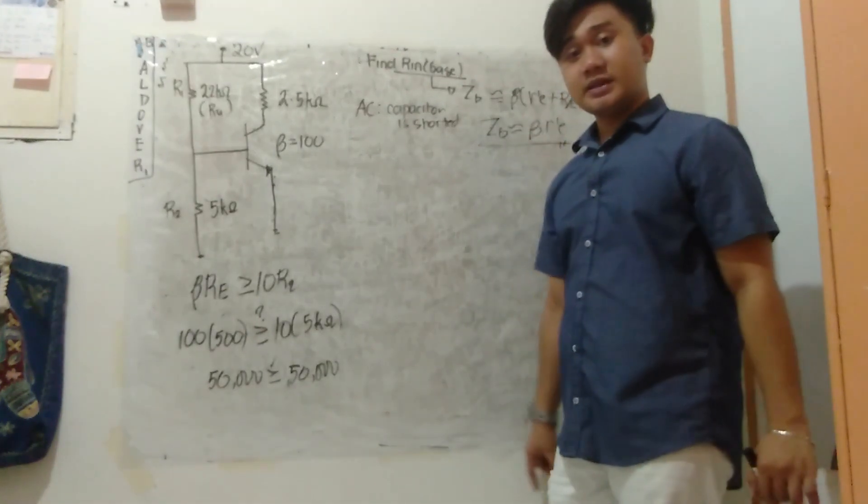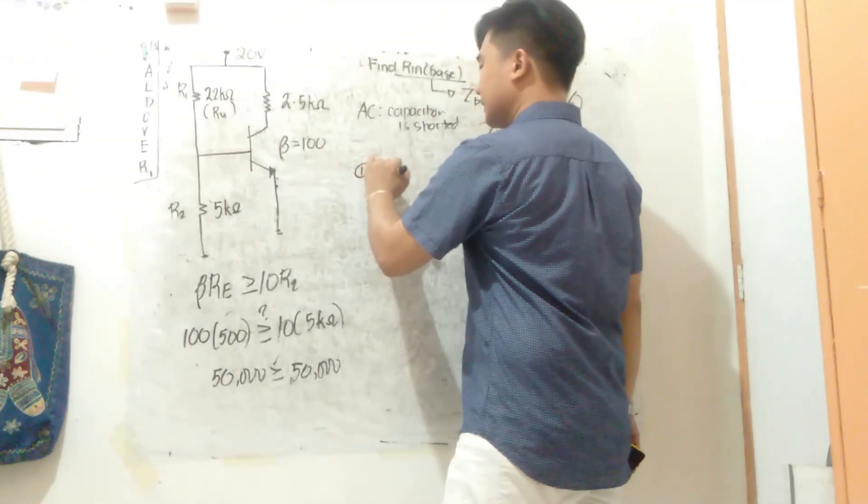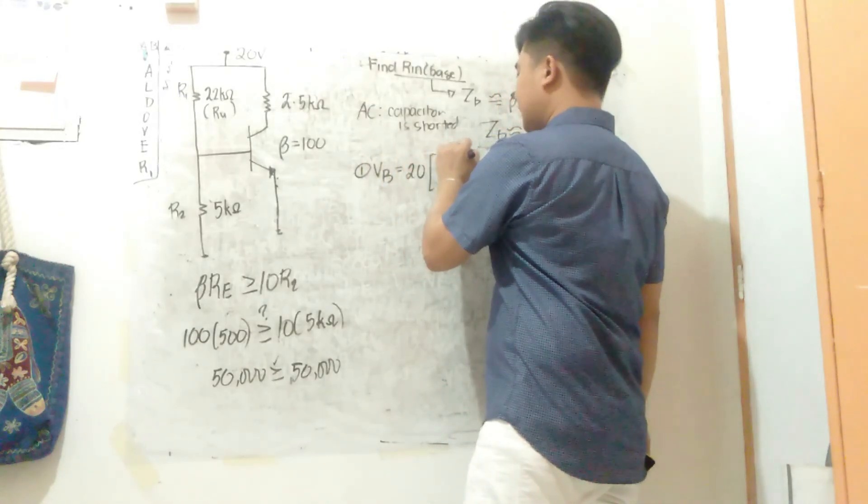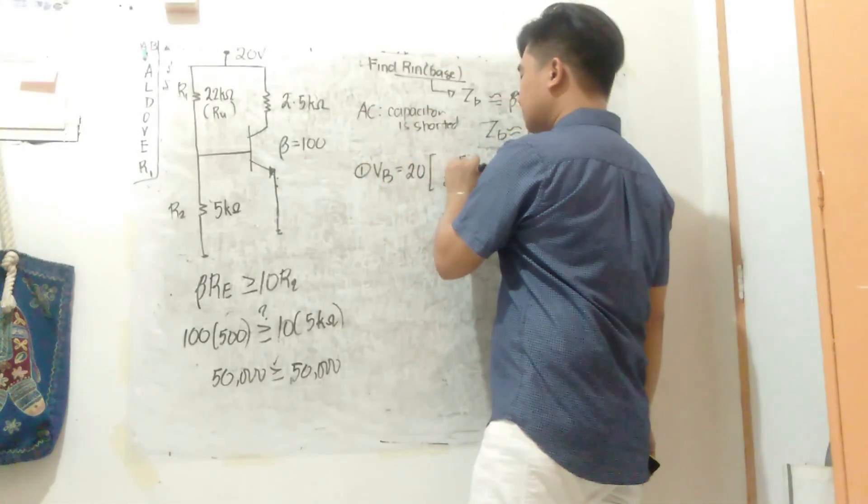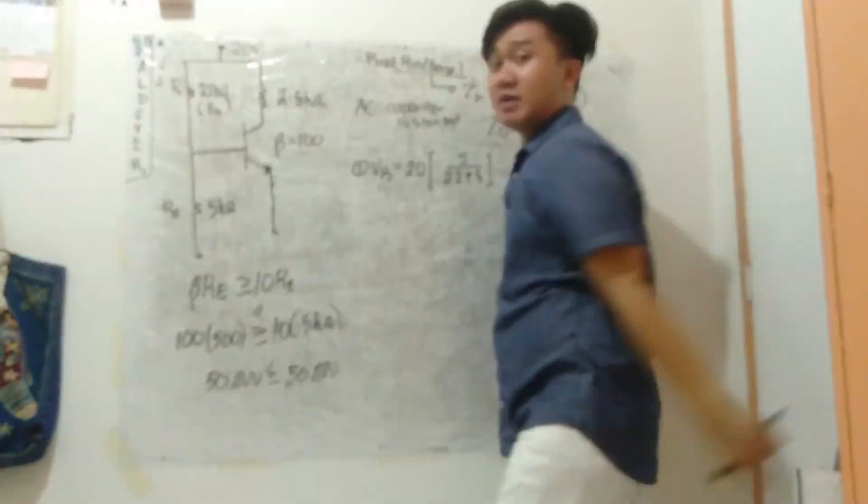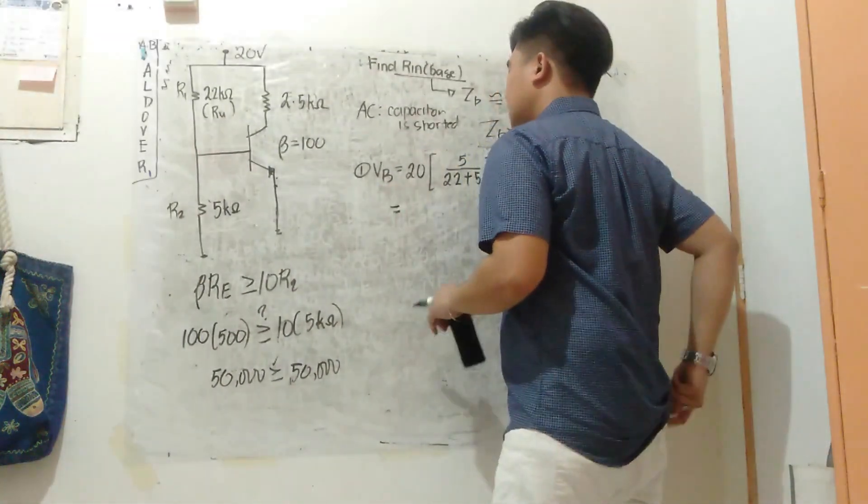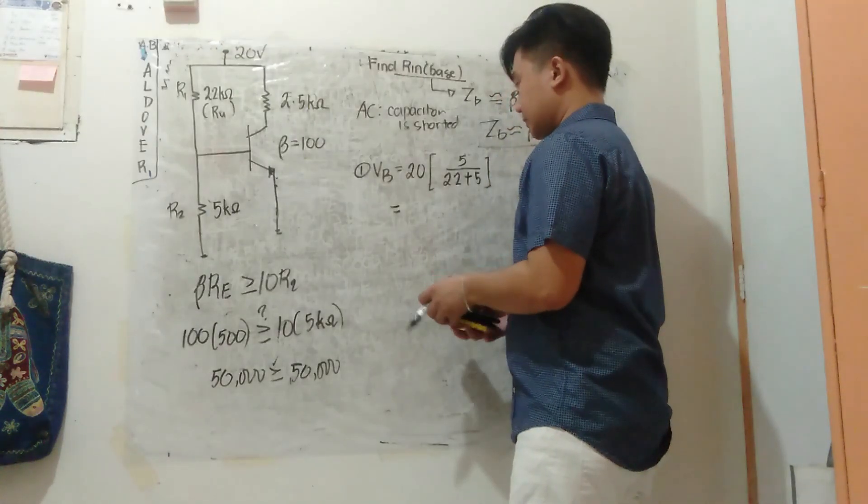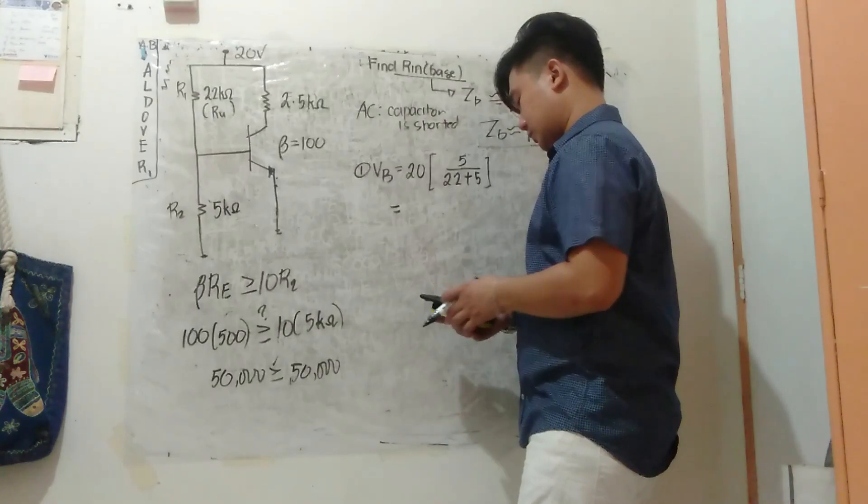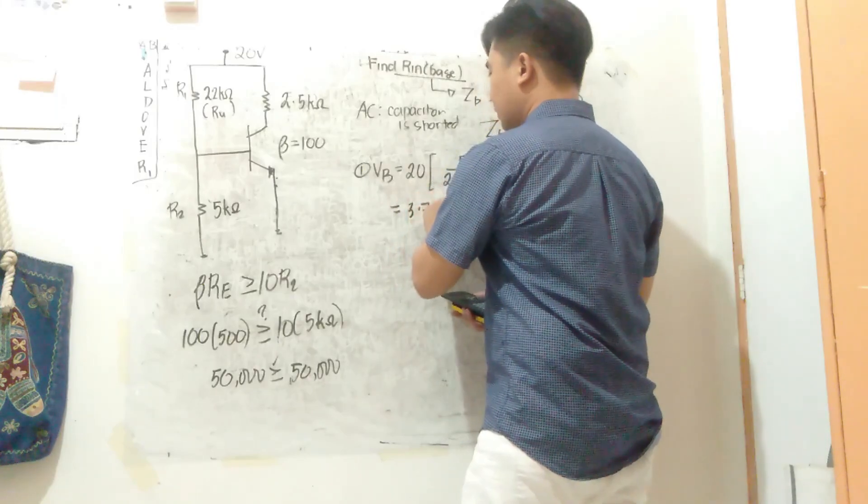Again, what's the first step in approximate analysis? Find VB. So VB is 20 times 5 all over 22 plus 5. Voltage divider principle. So this equals 3.70 volts.